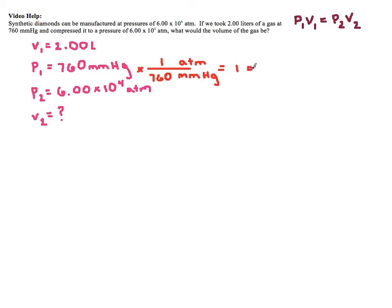All right. Now my pressures are in the same units. So now I can actually get to plugging in my numbers and chugging along. So my P1, we had said, was one atmosphere now that I've converted it, times my V1, which is 2.00 liters.